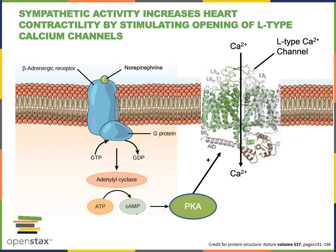Here we see the mechanism through which sympathetic activity increases contractility, or the force of contraction, by stimulating opening of L-type calcium channels. Norepinephrine released by postganglionic sympathetic fibers binds to beta-adrenergic receptors on the contractile cells in the myocardium. The beta-adrenergic receptor activates adenylyl cyclase to produce cyclic AMP, which binds to and activates protein kinase A. Protein kinase A phosphorylates L-type calcium channels, stimulating their opening so more calcium enters the cell during the plateau phase of the contractile cell action potential.